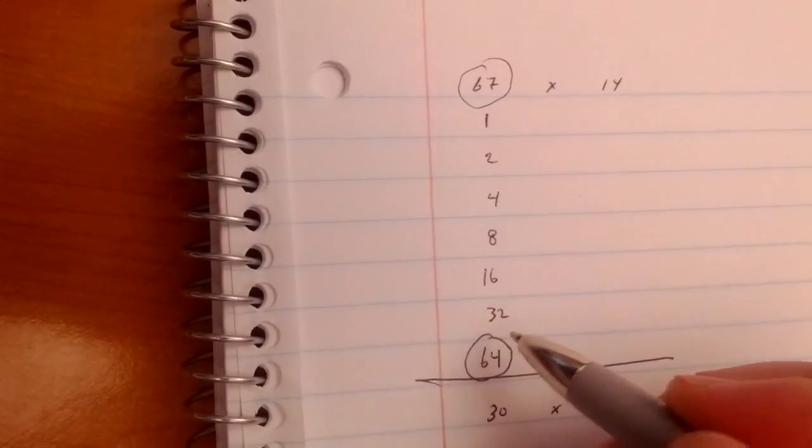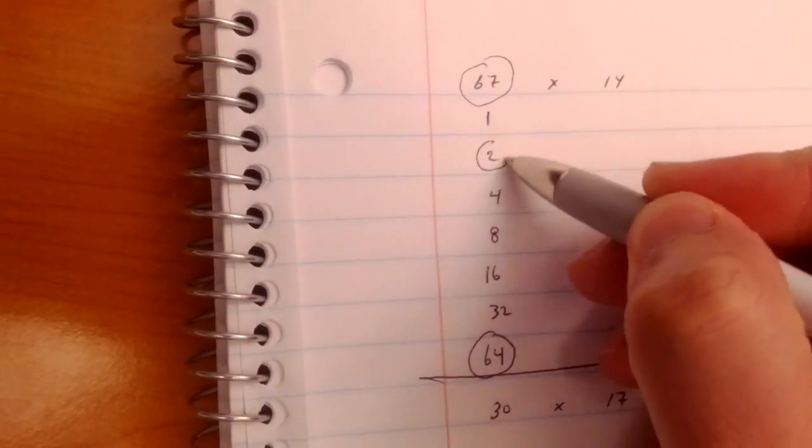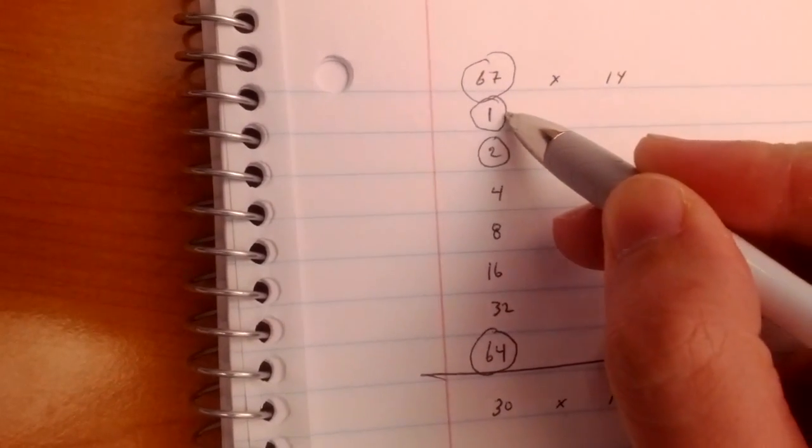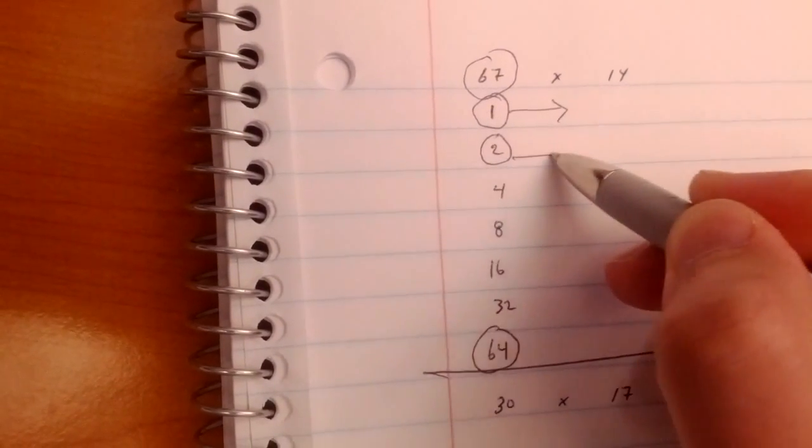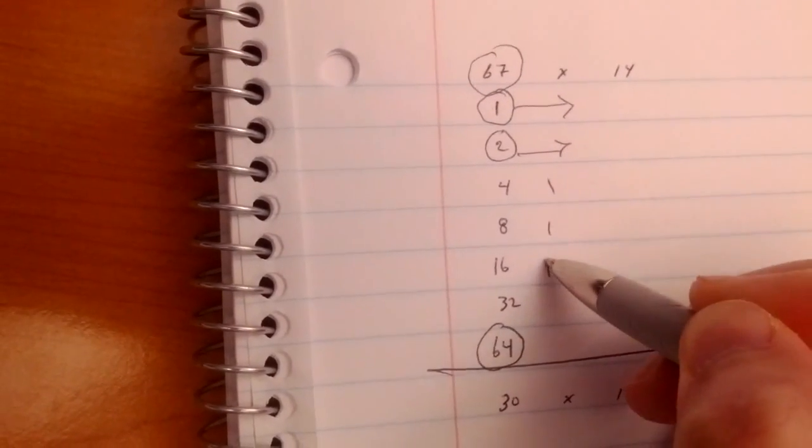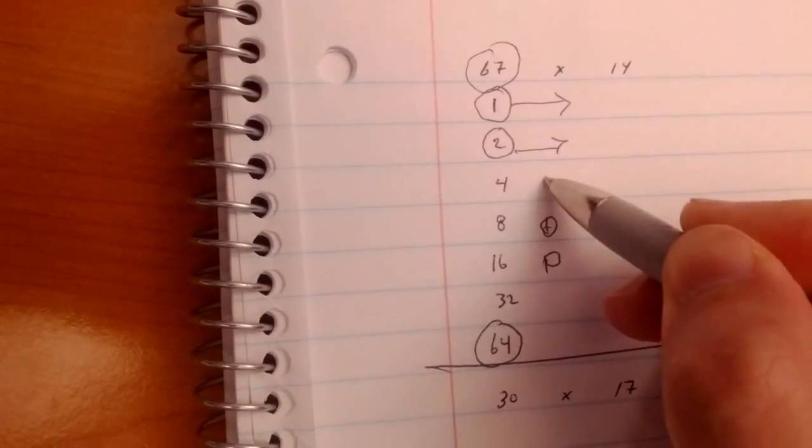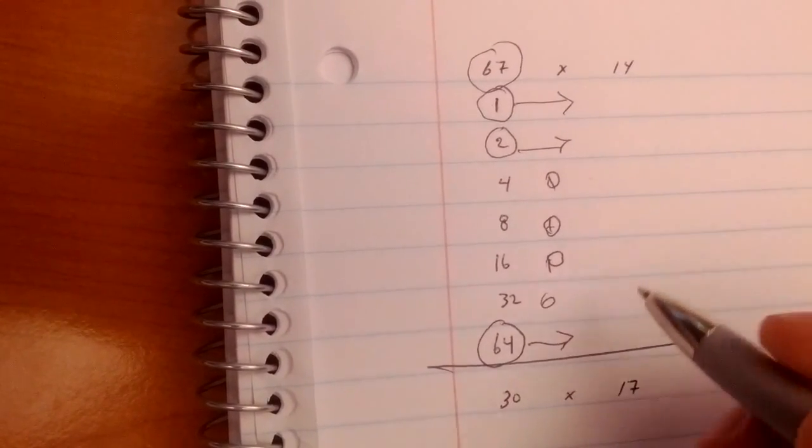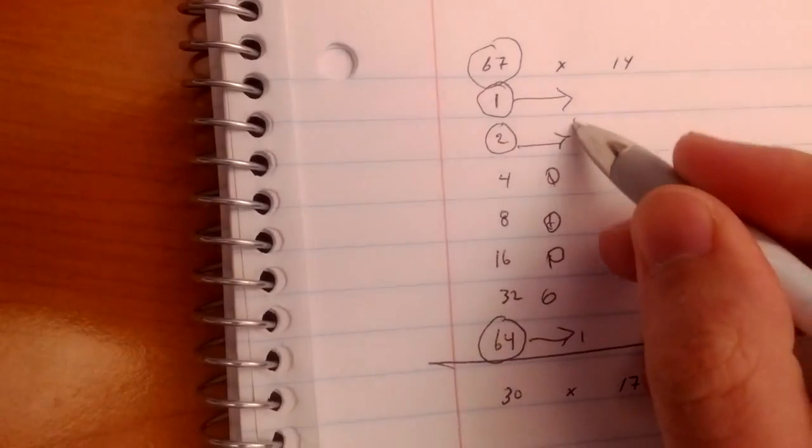Now, what you do is you add up numbers in this column that equal 67. Obviously I'm going to start with 64, and 2 makes 66, 67. These are the on switches: on, on, off, off, off. For any of your computers, these would be the ones. So why is that important?